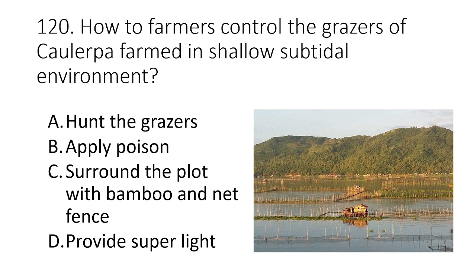Question 120. How do farmers control the grazers of Caulerpa farms in shallow subtidal environments? A. Hunt the grazers B. Apply poison C. Surround the plot with bamboo and net fence D. Provide supplemental light. The answer is C. Surround the plot with bamboo and net fence. This is our last question — I hope you learned something today. If you find this review useful, please share it with your friends and don't forget to subscribe. See you soon.